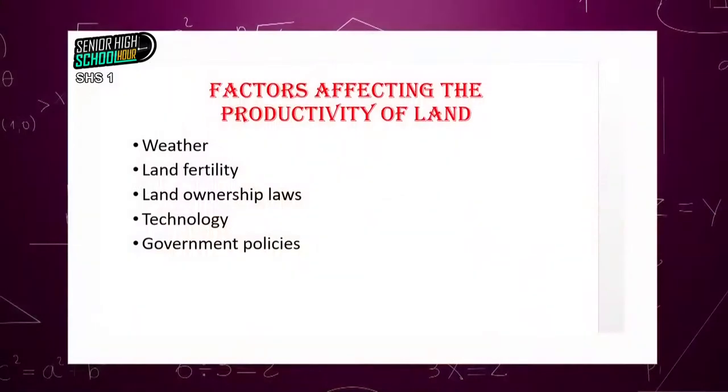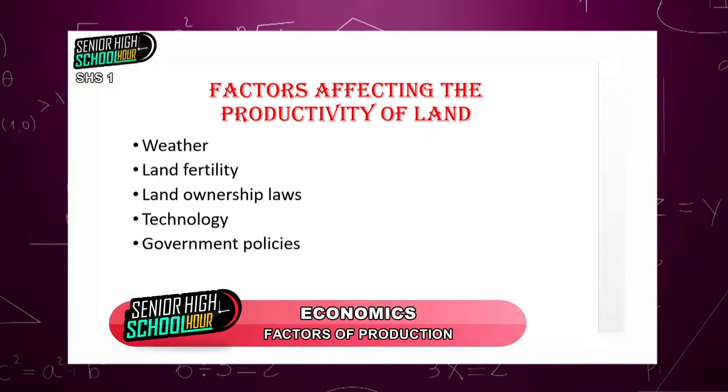Technology also affects land. To a large extent, technology affects productivity of land in a positive manner. There are lots of technologies that boost productivity of land. When we use mechanized farming, it boosts productivity of crops. Look at the technology used to build high-rise buildings — in times past, a plot of land could build a maximum four or five-bedroom house, but today due to technology, that same land can produce more than enough apartments.